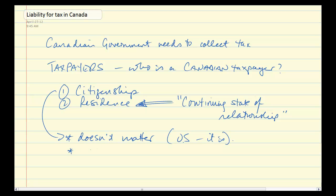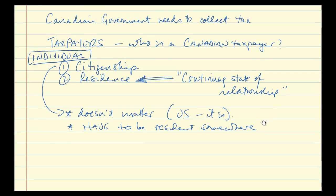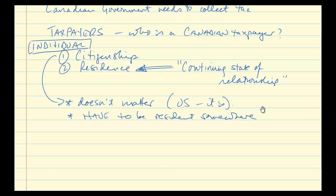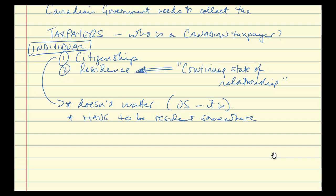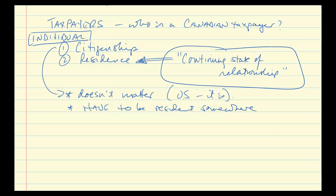The other thing to note is that an individual has to be resident somewhere. This becomes important in cases where it's not entirely clear. These are individuals we're talking about right now — we'll talk about corporations at the end. Most of you are Canadian residents, although there may be a few international students in the class whose homes are somewhere else, and they may not be liable for Canadian tax. You have to be resident somewhere, and your citizenship doesn't matter. It all comes down to this: do you have a continuing state of relationship with Canada?